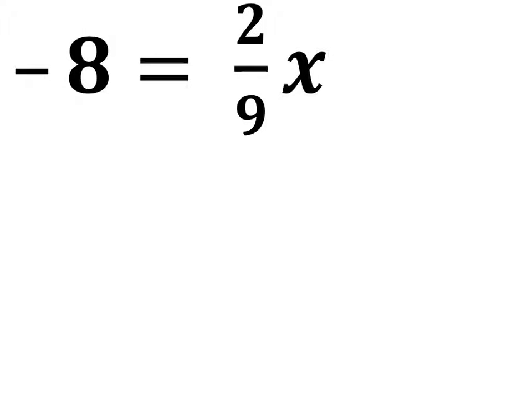Alright, number 39. Notice that this is 2 ninths times the x, so to get rid of that 2 ninths, we'll have to divide both sides by 2 ninths.